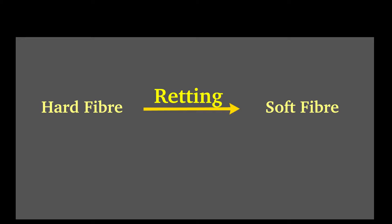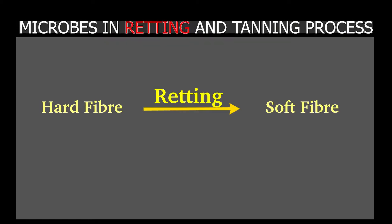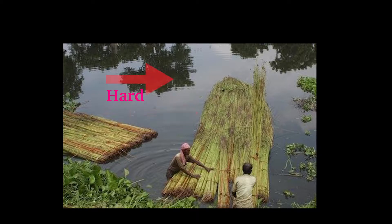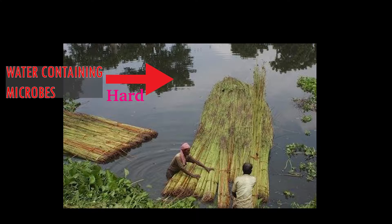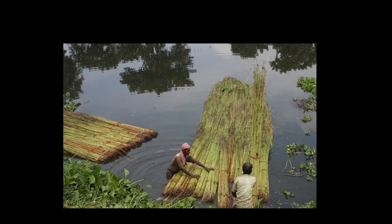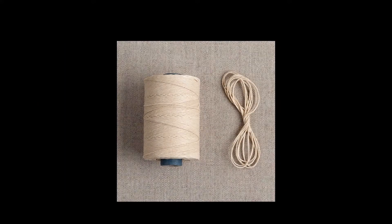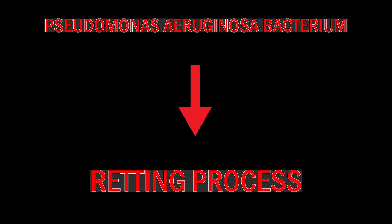Uses of microbes in retting process. Retting is the process of softening the plant fiber. Raw fiber from plants is very hard in quality. To make it soft, it is dipped in water containing microbes. Microbes feed on stem tissue and make the fiber in it soft. Linen thread is made from these fibers. Pseudomonas aeruginosa bacterium is used in the retting process.